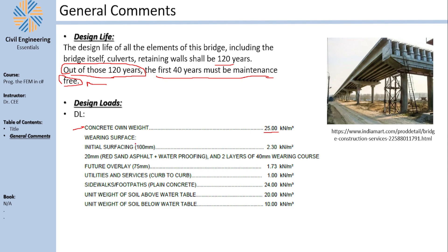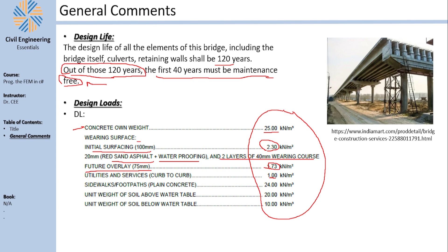The design loads we are using: for the self-weight of concrete we'll assume 25 kN/m³. For the wearing surface, you have an initial surfacing of 100 mm consisting of 20 mm red sand asphalt, waterproofing, and two layers of wearing coat. In the future you might add an overlay of 75 mm thick. There are also utilities and surfaces — drainage, electricity, and so on — assumed at 1 kN/m. These loads are taken from a real project, not made up.